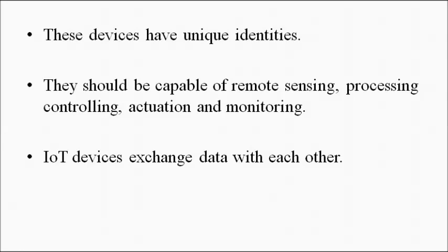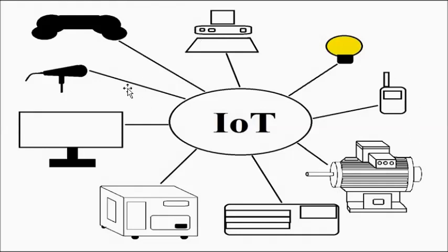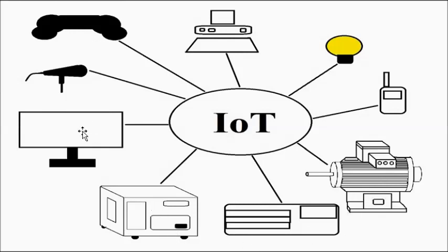We can visualize IoT as something like this: the various devices, gadgets, machinery, and electronic appliances are connected to one big network called the IoT network, interconnected to each other. It can be a computer, a bulb, a phone, a generator, an air conditioner, a motor, a smart TV, a loudspeaker, a microphone, a gaming console — anything operated electrically can be part of the IoT network. These are just a few examples.